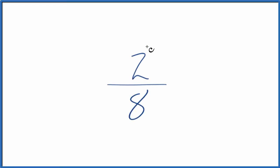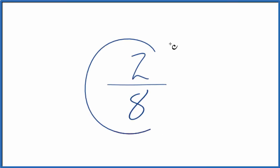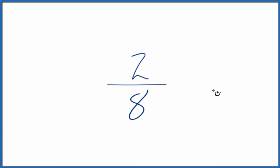Let's find three equivalent fractions for 2/8. We want to find another fraction that's equivalent — it has the same value as 2 divided by 8, just with a different numerator and denominator.